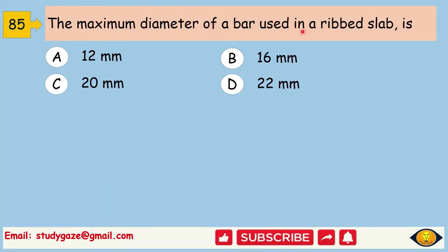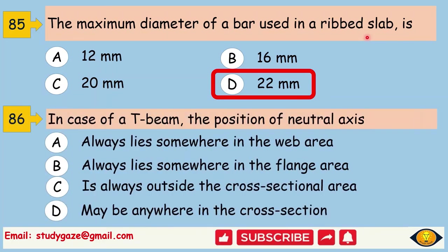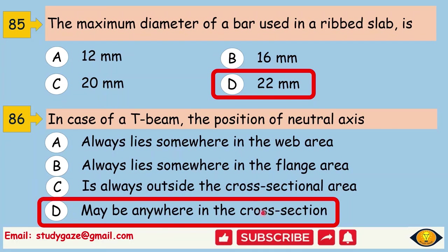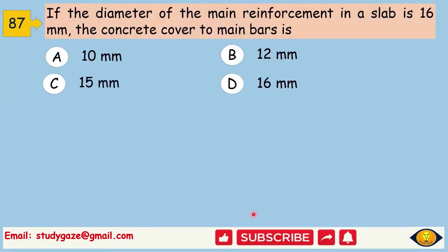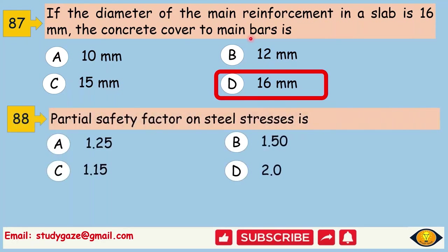The maximum diameter of a bar used in a ribbed slab is. Answer is 22 mm. In case of T beam, the position of neutral axis may be anywhere in the cross section. If the diameter of the main reinforcement in a slab is 16 mm, the concrete cover to the main bar is. Answer is 16 mm. Partial safety factor on steel stresses is 1.15.